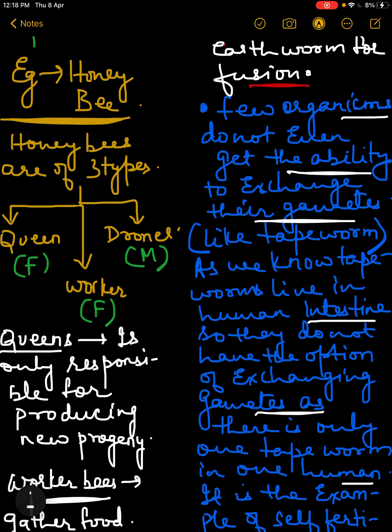To explain parthenogenesis, we will take the example of the honeybee. There are three types of bees in a beehive: one is the queen, another is the worker bee, and there are the drones. The queen and worker bees are both female, and drones are always male.